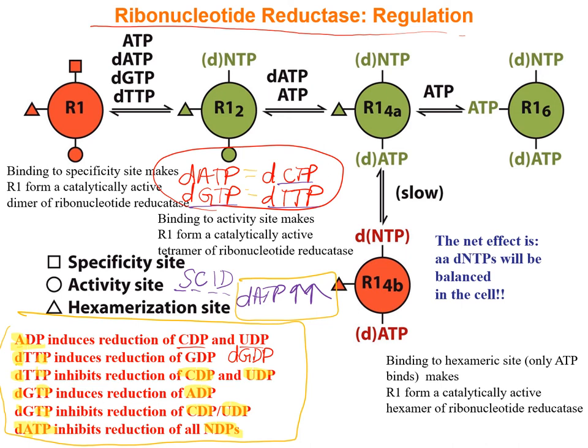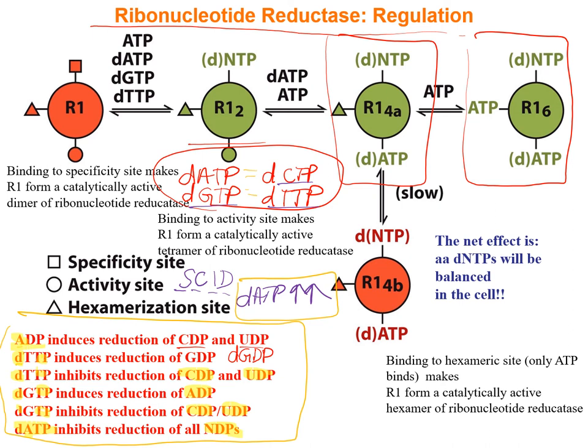Activity is also influenced by dimerization. The active dimer version of ribonucleotide reductase can form an even more active hexameric version, and also a tetrameric version. Ribonucleotide reductase exists as an R1 dimer and an R2 dimer — containing Fe³⁺, oxygen, and a tyrosyl radical. What influences dimerization into the active tetramer and hexamer has to do with the levels of the nucleotide triphosphates.